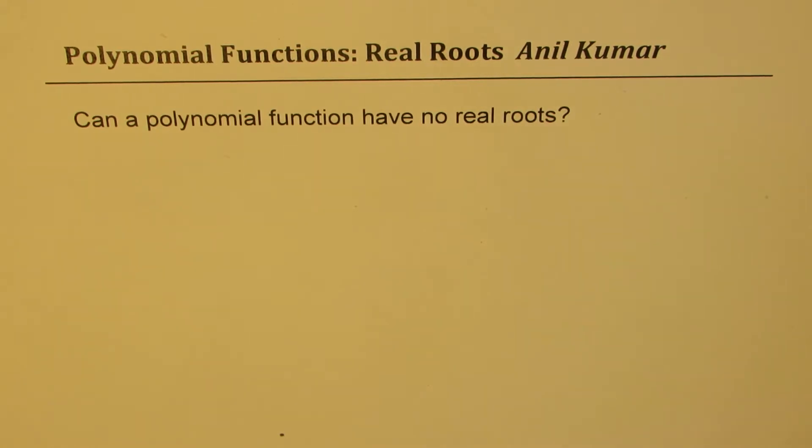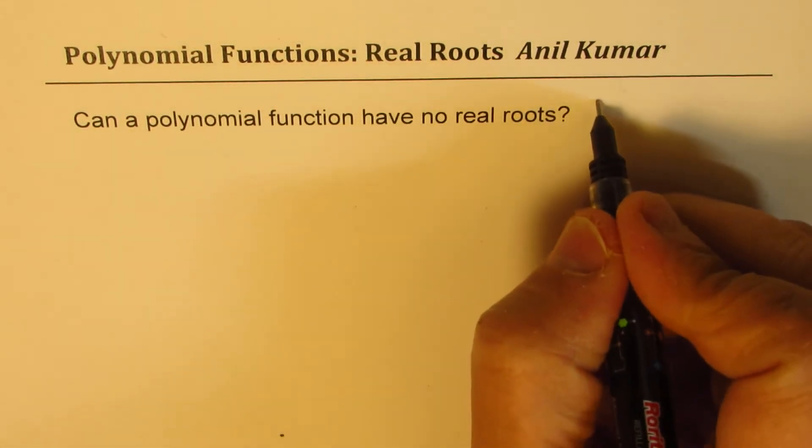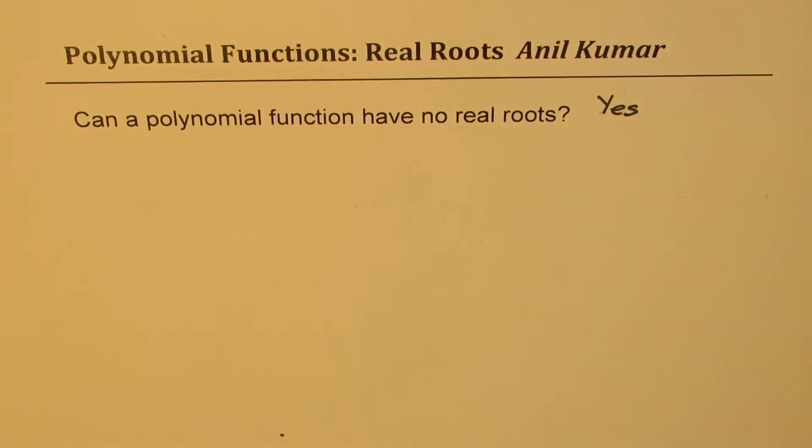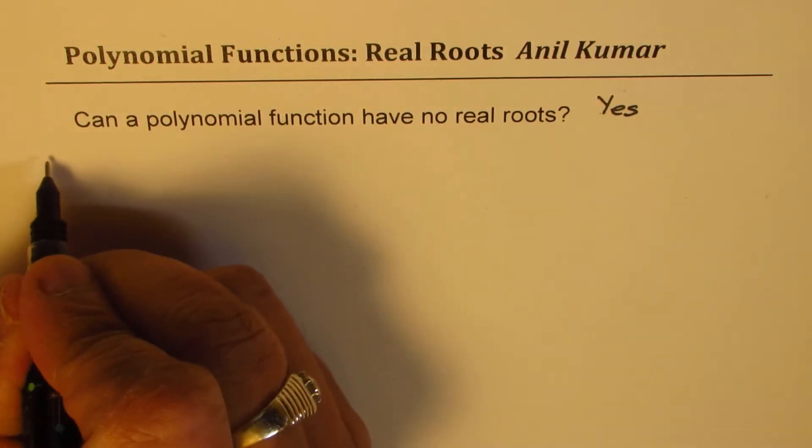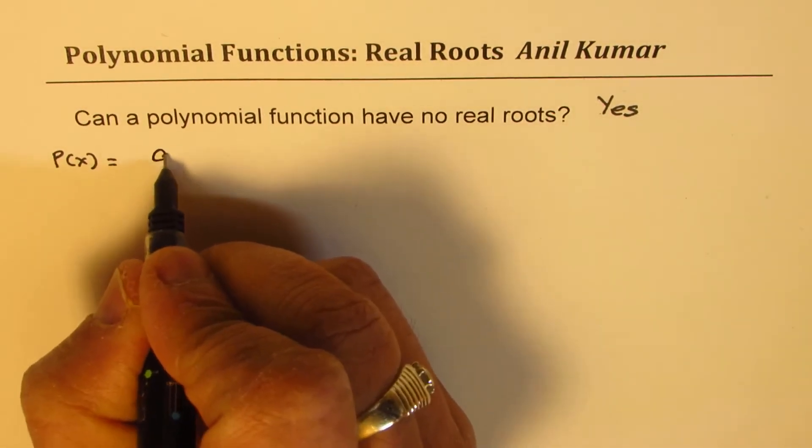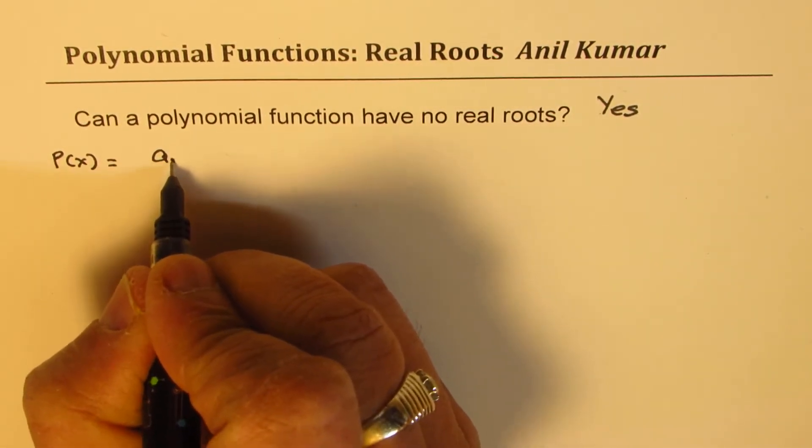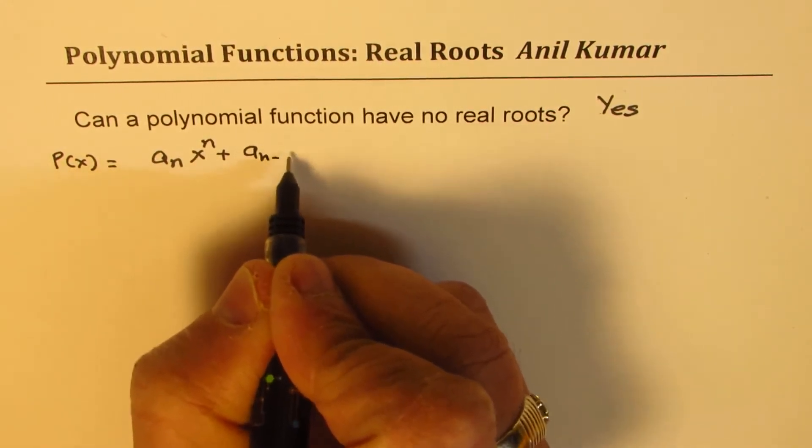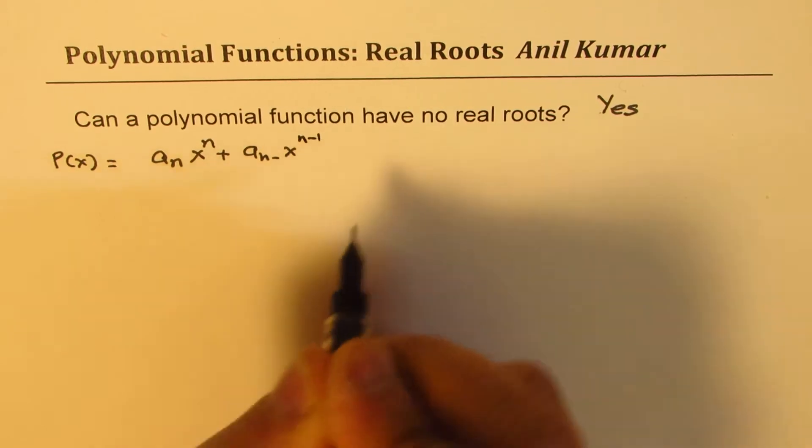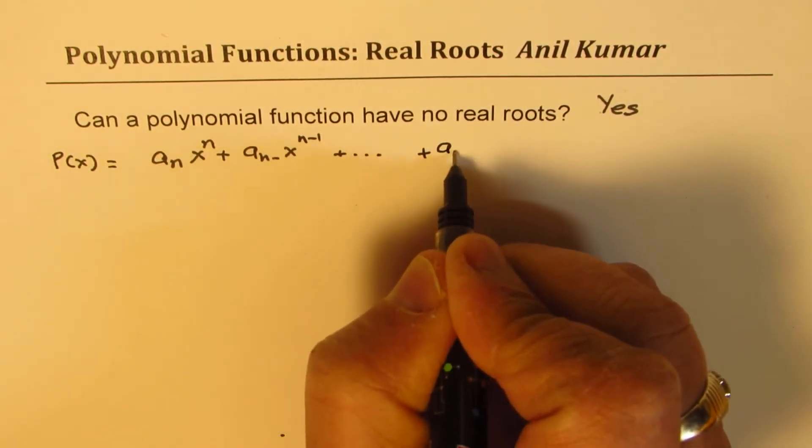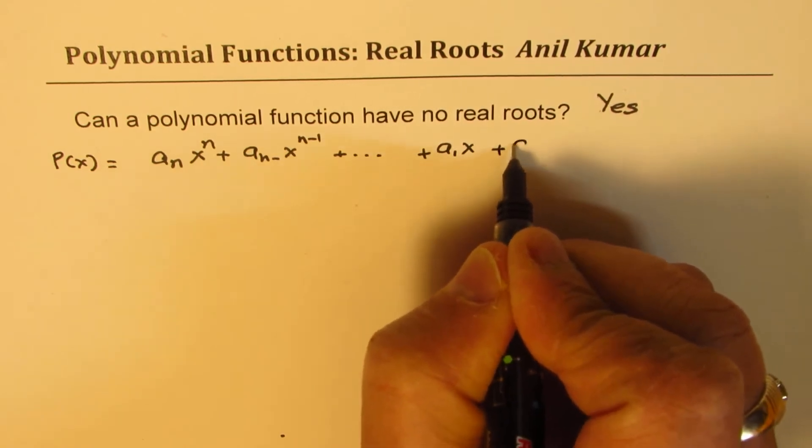So we need to understand the basic concept. The answer is yes, let me write that down first. Any polynomial function can be written as sum of terms: an x to the power of n plus an minus 1 x to the power of n minus 1 plus so on, till a1x plus some constant a0.